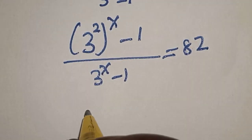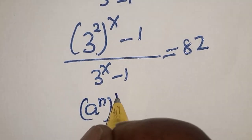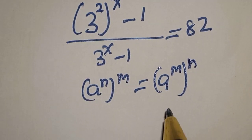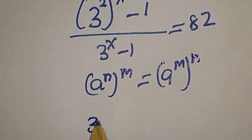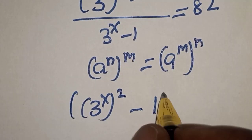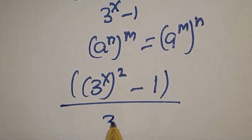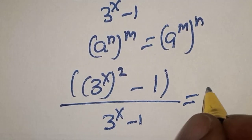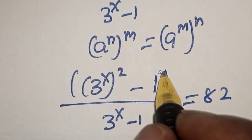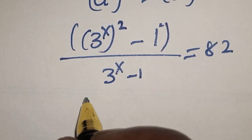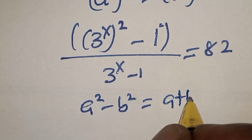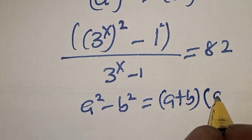Remember the rule that a raised to power n, raised to power m, is equal to a raised to power m times n. So 9 raised to power s becomes 3 raised to power 2s. This gives us 3 raised to power 2s minus 1, divided by 3 raised to power s minus 1, is equal to 82. Note that 3 raised to power 2s is the same as 3 raised to power s squared, and this is a difference of two squares. Remember the rule: a squared minus b squared equals a plus b multiplied by a minus b.